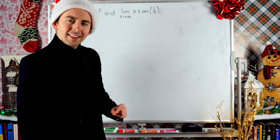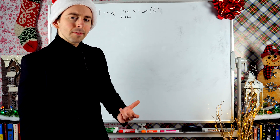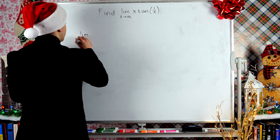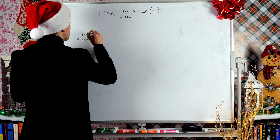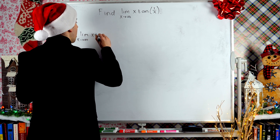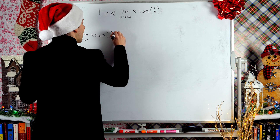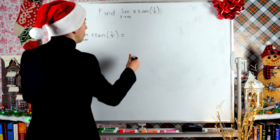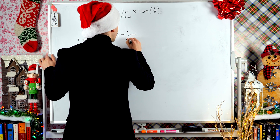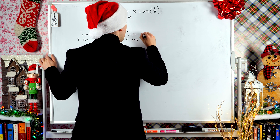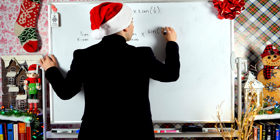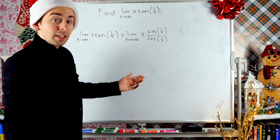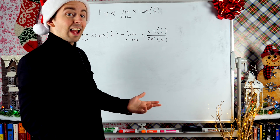But is there a different way I could write this limit so that I can use the product rule? Well, tangent is equal to sine over cosine — if you know your basic trigonometry. So I'm going to write the limit as x approaches infinity of x times tangent of 1 over x, and rewrite it with tangent as sine over cosine. This is the same as the limit as x approaches infinity of x times sine of 1 over x, divided by cosine of 1 over x.